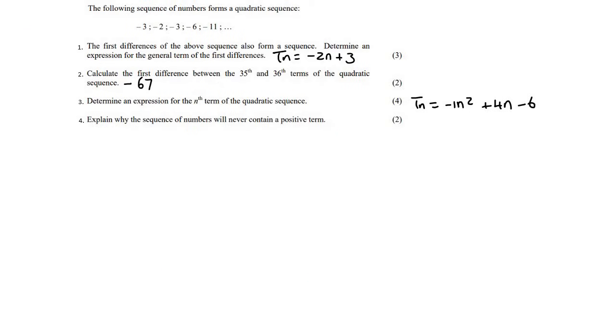Number four is a very interesting one. So it says explain why the sequence of numbers will never contain a positive term. So what you can do is you can think of this as a graph. What graph does this look like? Well, it looks like a parabola, right? Because that would be negative X squared plus 4N, I mean, plus 4X minus six.